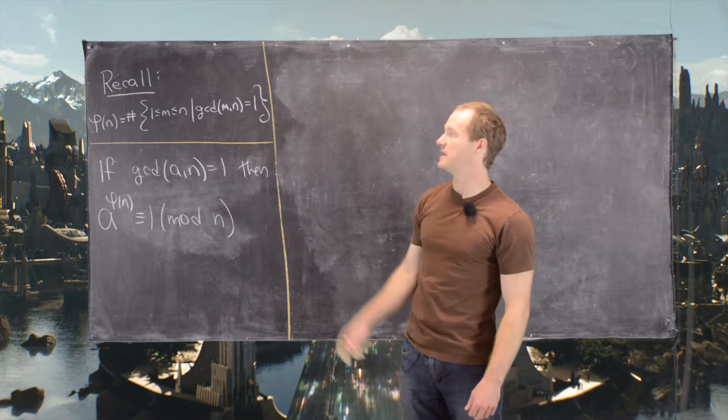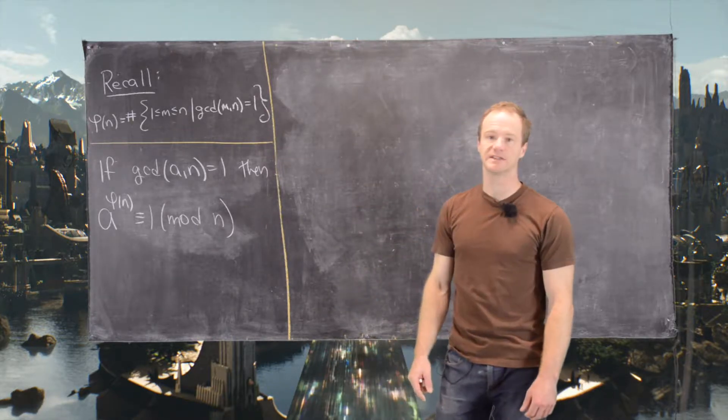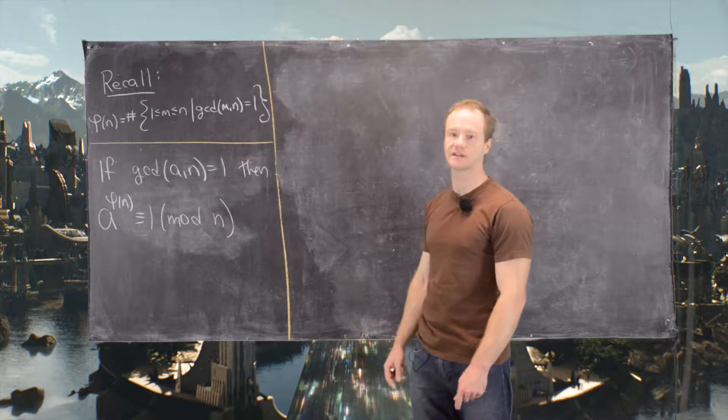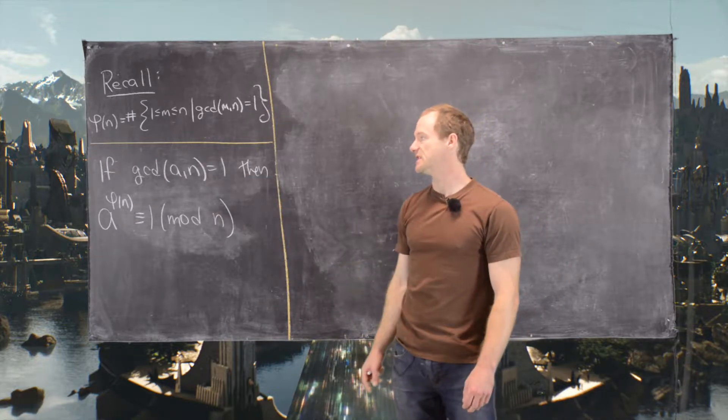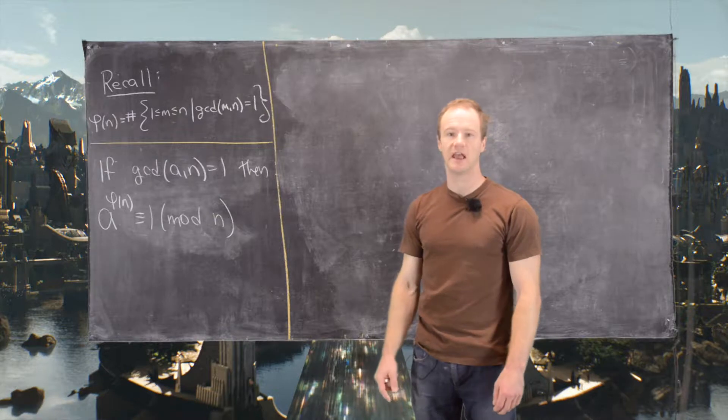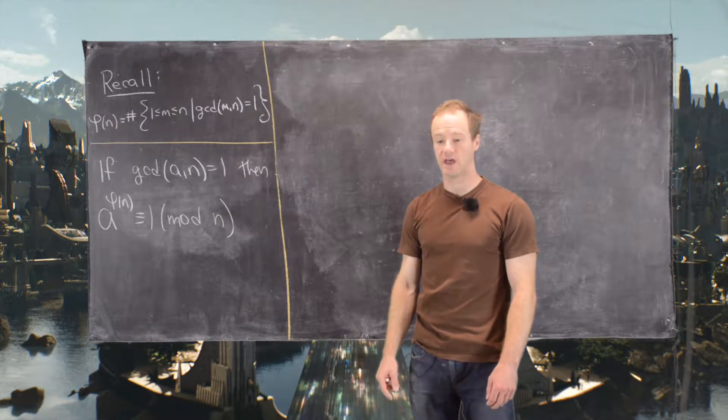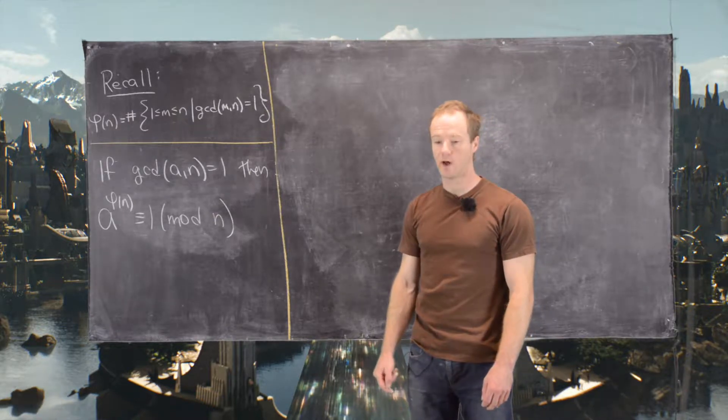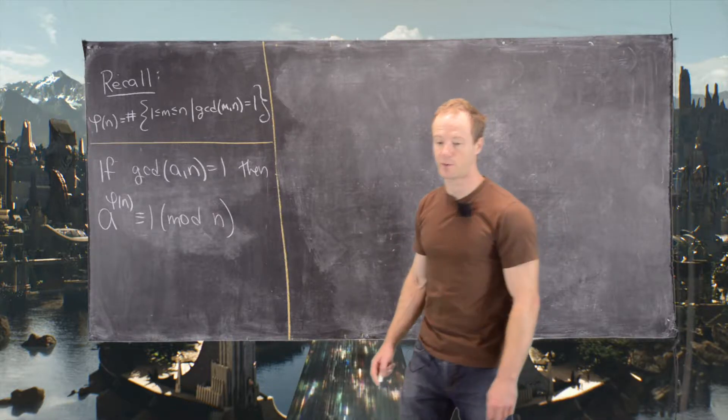So let's just recall, phi of n is the number of positive integers between 1 and n that are relatively prime to n. And then if the GCD of a and n is 1, then a to the phi of n is congruent to 1 mod n. So here's what we want to look at.